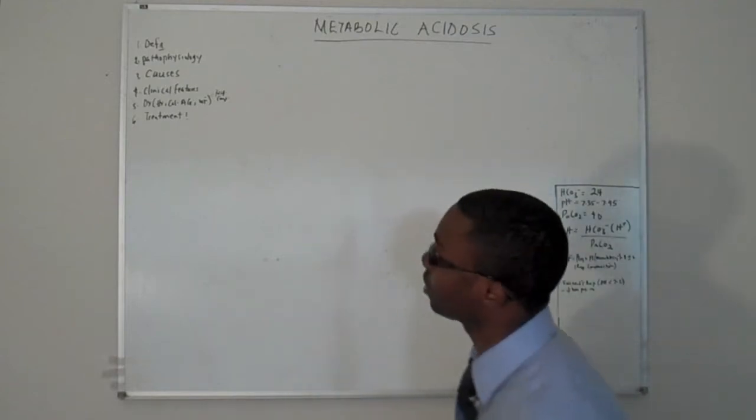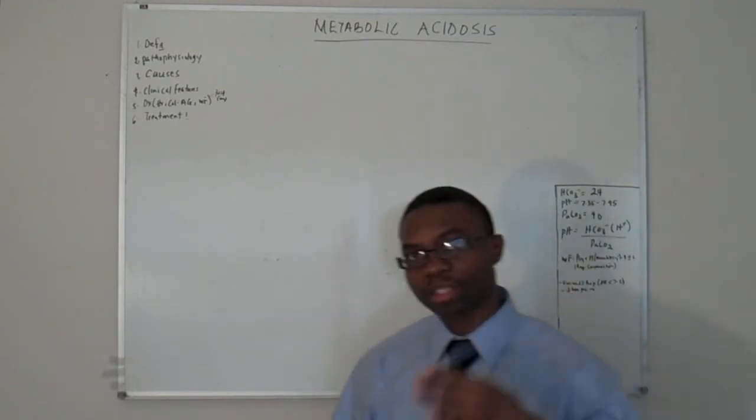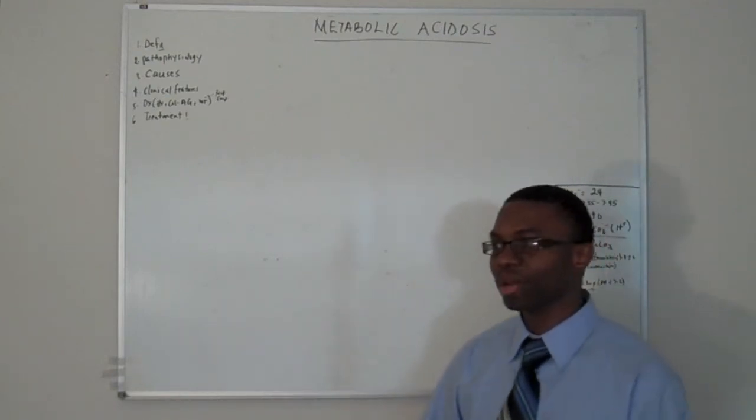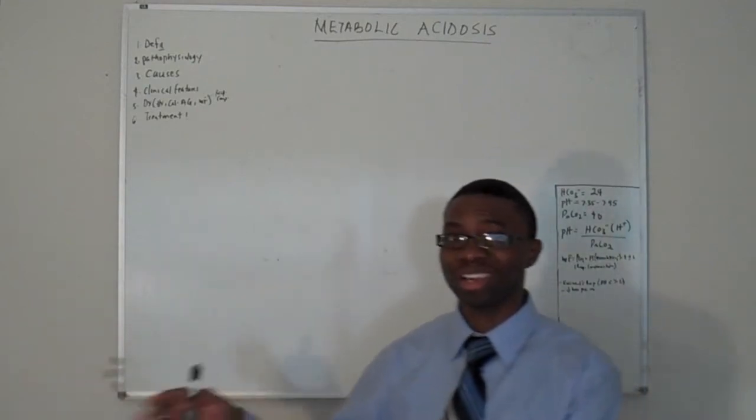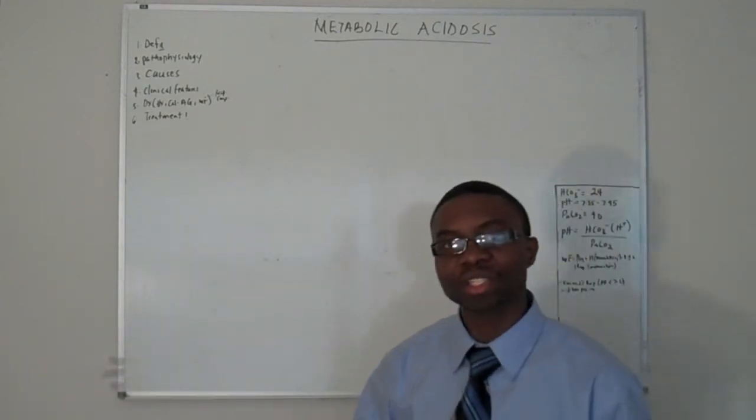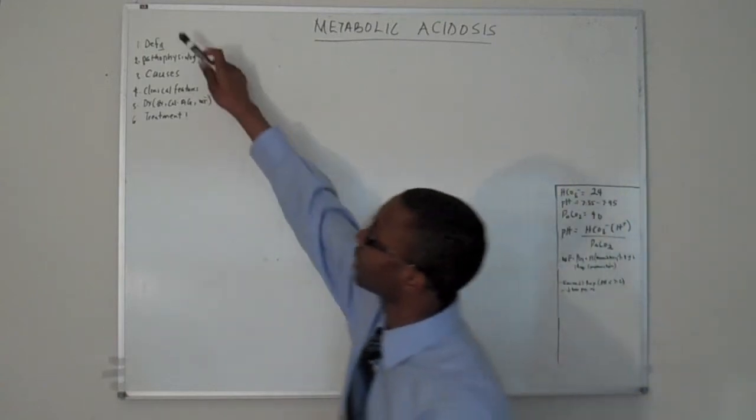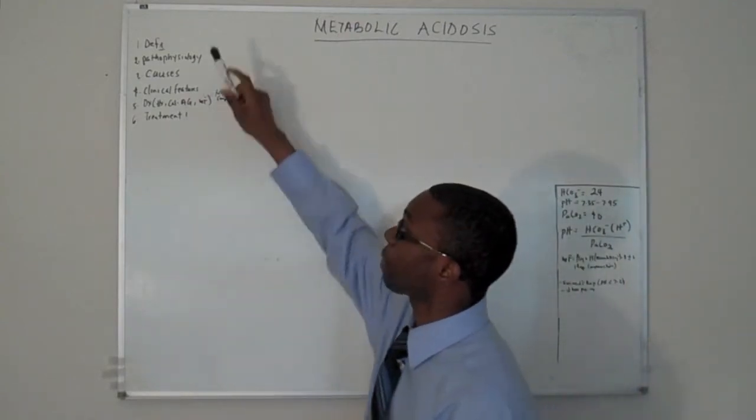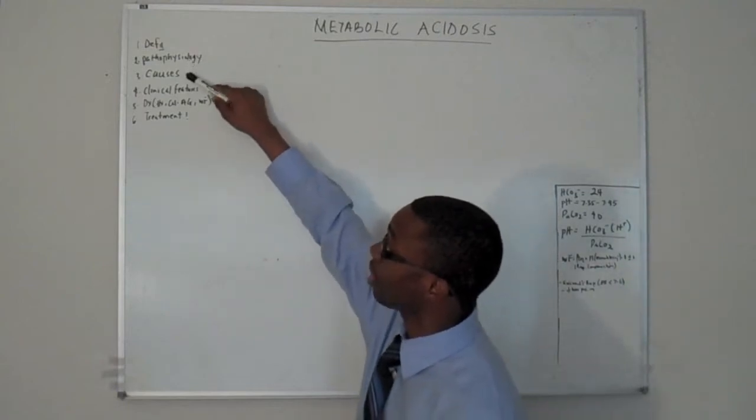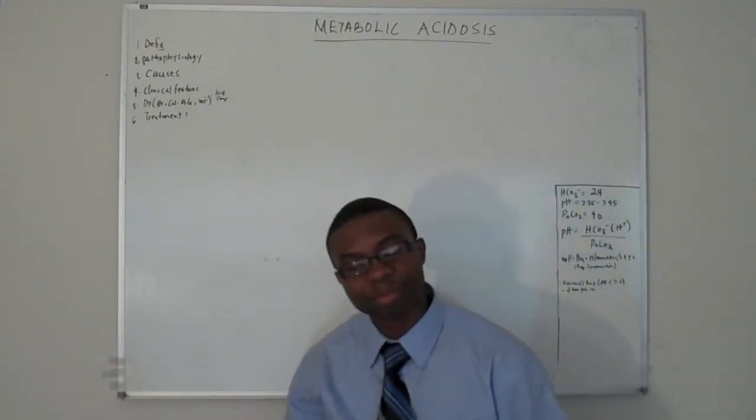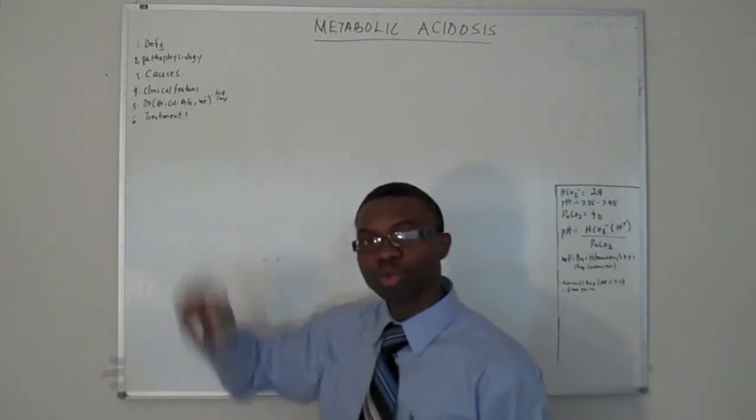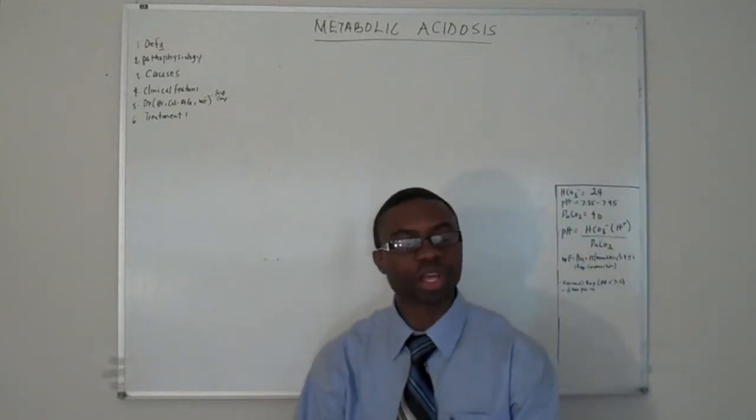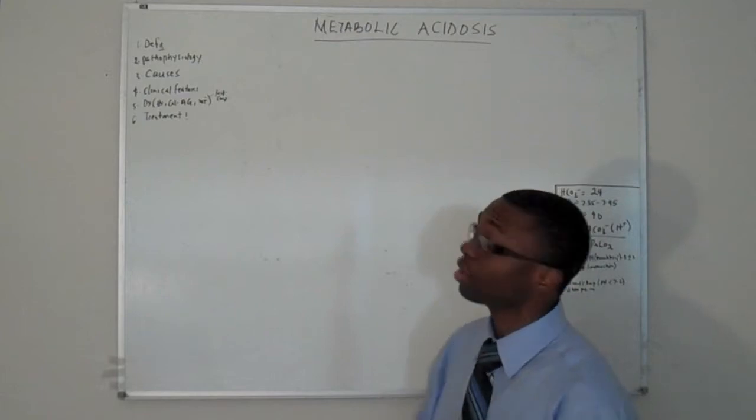So today we're talking about metabolic acidosis. First of all, I think we need a system here. So this is how you start thinking as a medical student. I know they don't teach you this in medical school. They want you to learn it like 10 years down the line. But let's start learning right now. So every disease process, your job is first, learn the definition. Then we're going to move on to the pathophysiology. We're going to talk about the causes. What's the patient going to present with? How do we make the diagnosis? And how do we treat it? We're just like mechanics. We look for stuff, we fix it, we leave it alone.